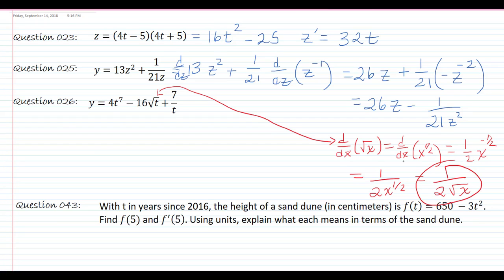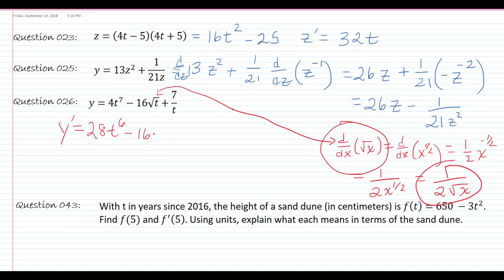So I always tell students, put this on a formula sheet: the derivative of the square root of x is 1 over 2 square root of x. Now y prime — that would be 28t to the 6. I took 7 times 4 is 28, subtracted 1. Bring the 16 out front. The square root of t is 1 over 2 square roots of t.